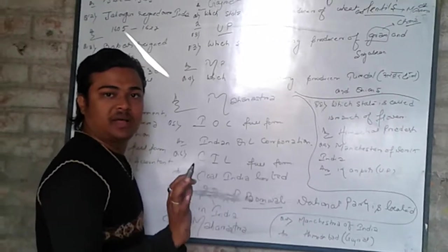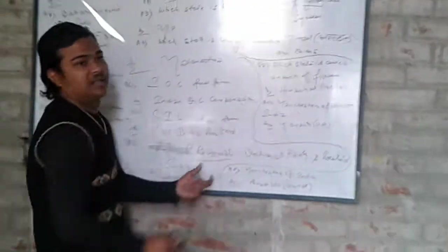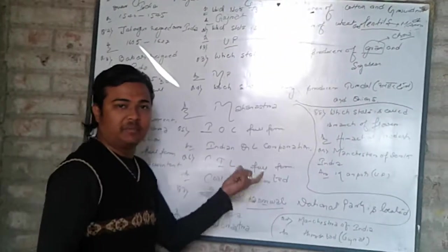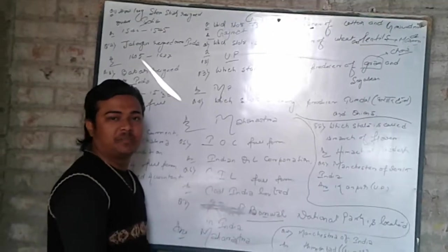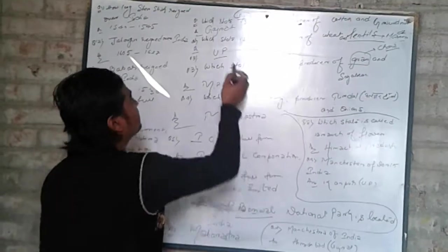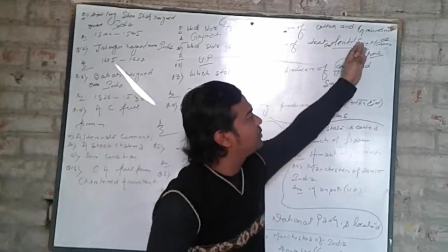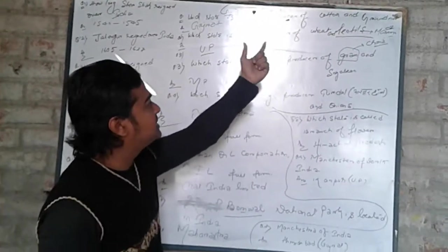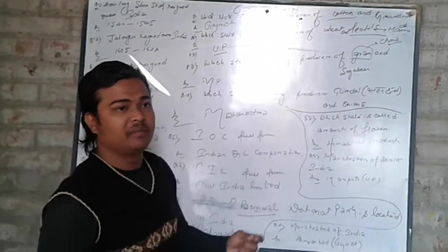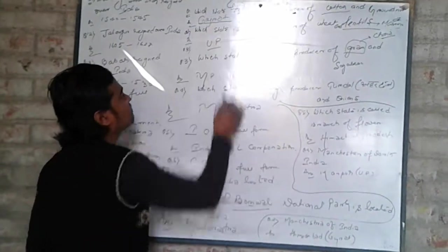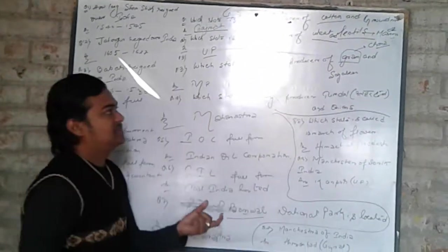Alright, let's study. Let's start with the first question: Which state is the leading producer of cotton and groundnut? Next question: Which state is the leading producer of gram and soya?